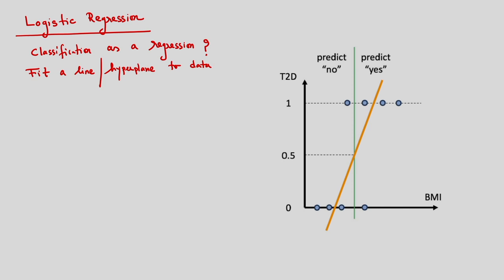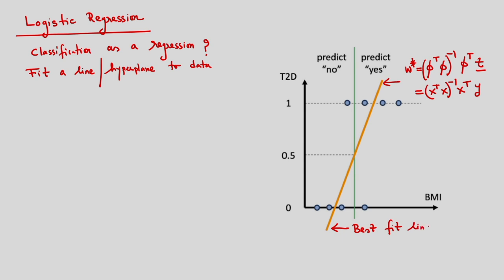Corresponding to this, we have to find the weights W. From linear regression, I can get this line between the data points. The weight can be obtained as W = (Φ^T Φ)^{-1} Φ^T t, which is equivalent to (X^T X)^{-1} X^T y — already shown in my linear regression lecture. This gives us the best fit line between the data points.